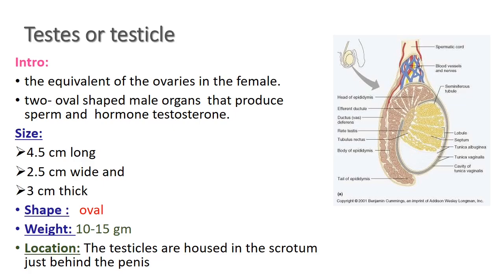Now we learn about the testes, or testicle. The testes are the equivalent of the ovaries in the female. They are two oval-shaped male organs situated in the scrotum — one on each side. They produce sperm as well as the hormone testosterone.